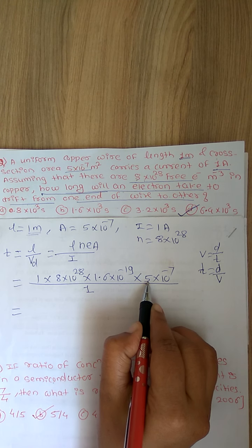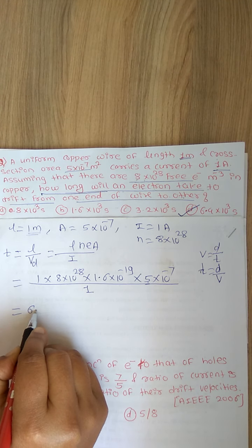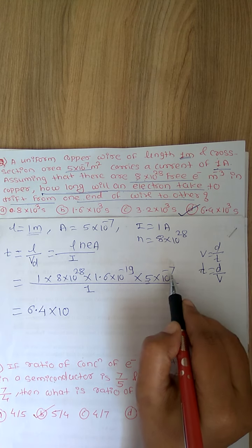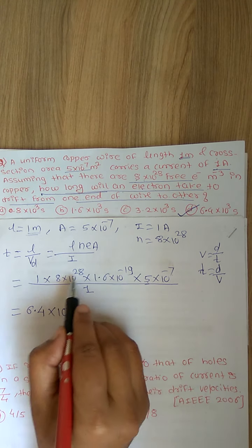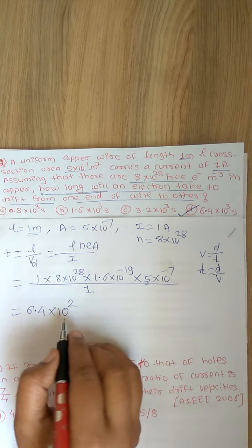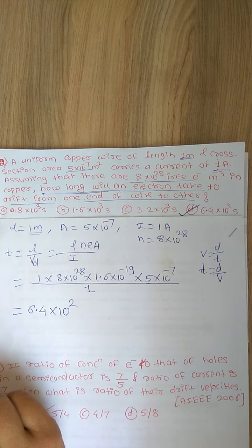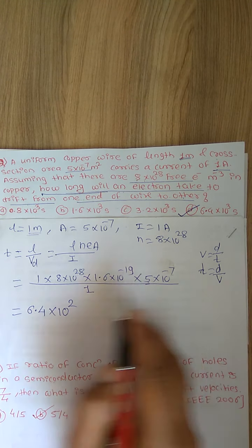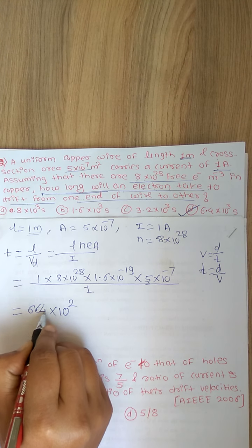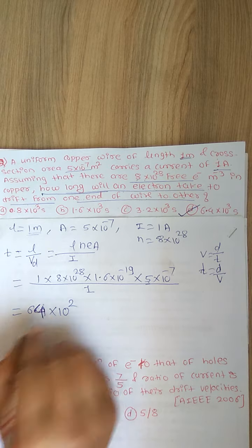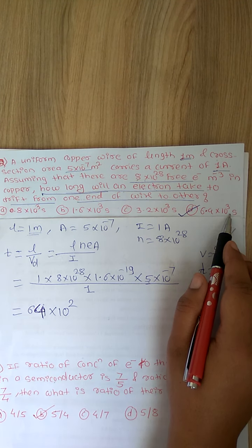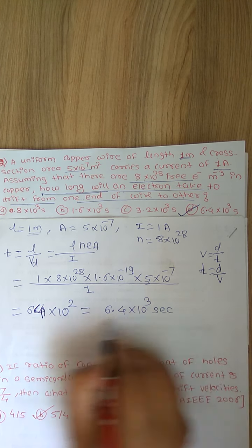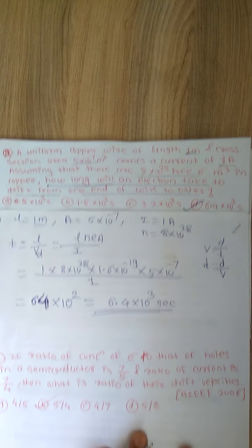Solving: 1.6 × 5 is 8, 8 × 8 is 64, giving 64 × 10² in the numerator from combined powers (28 − 19 − 7). Rearranging gives 6.4 × 10³ seconds. The answer is 6.4 × 10³ seconds. This is how we solve this type of example.